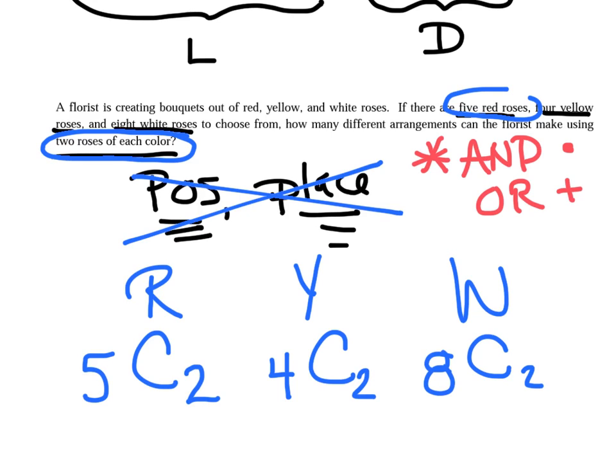Now, I didn't necessarily see and or or, but let's use some common sense. You need two of each color. That means you need two red, and two yellow, and two white. Notice I'm saying the and word, so I'm going to put multiplication between those. And again, at this point, plug and chug on your calculator, and I'm going to assume we can all do that fairly easily.